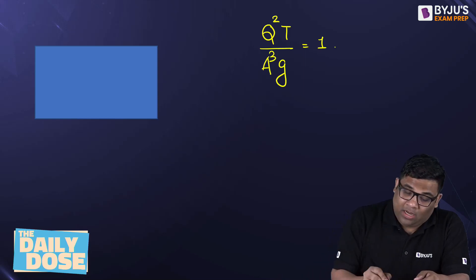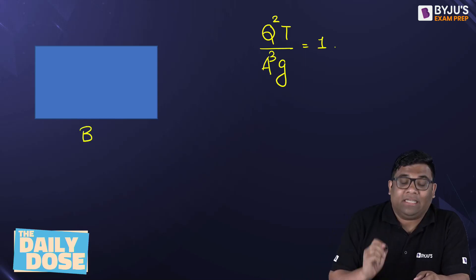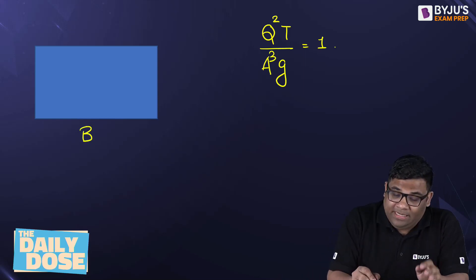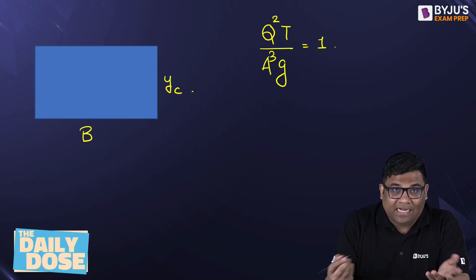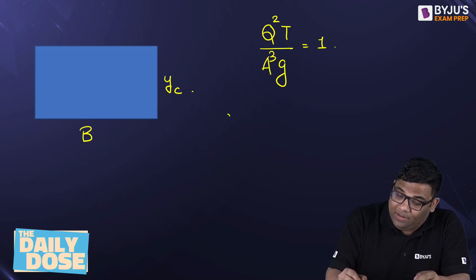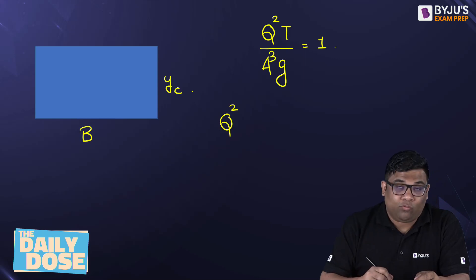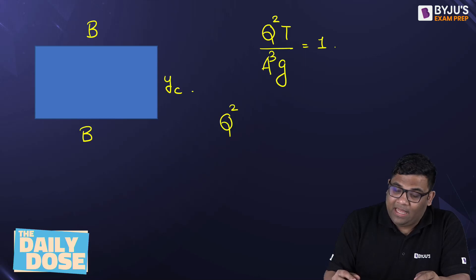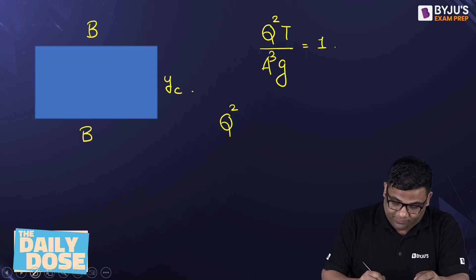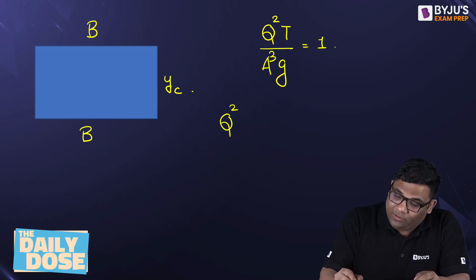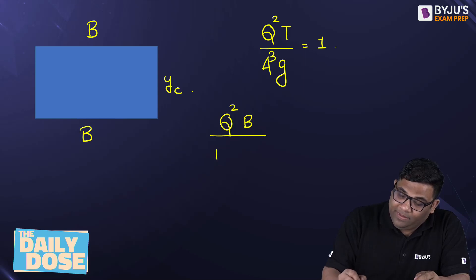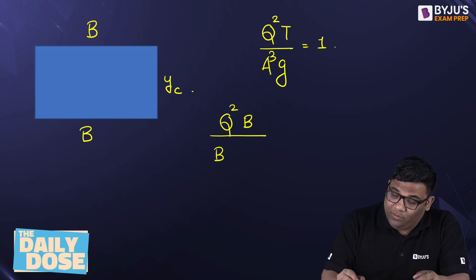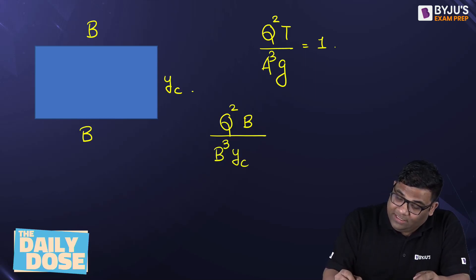When I apply this to a rectangular cross section having width b and depth of flow equal to the critical depth, what will happen? The equation will be q squared t — the top width will be b only. The area will be equal to b into yc, so area cubed will be b cubed yc cubed, and then g is equal to 1.